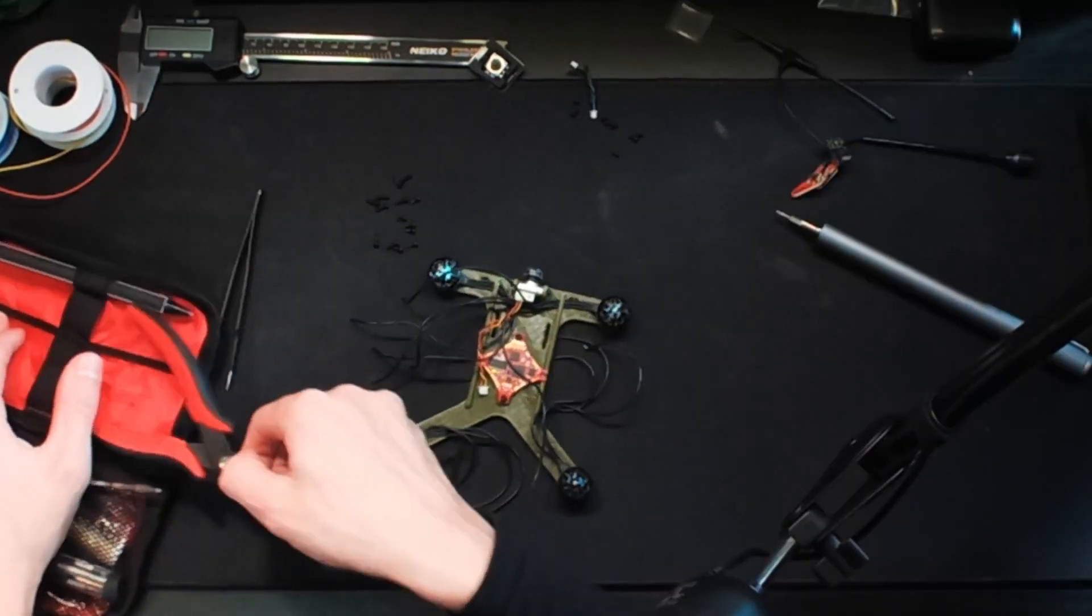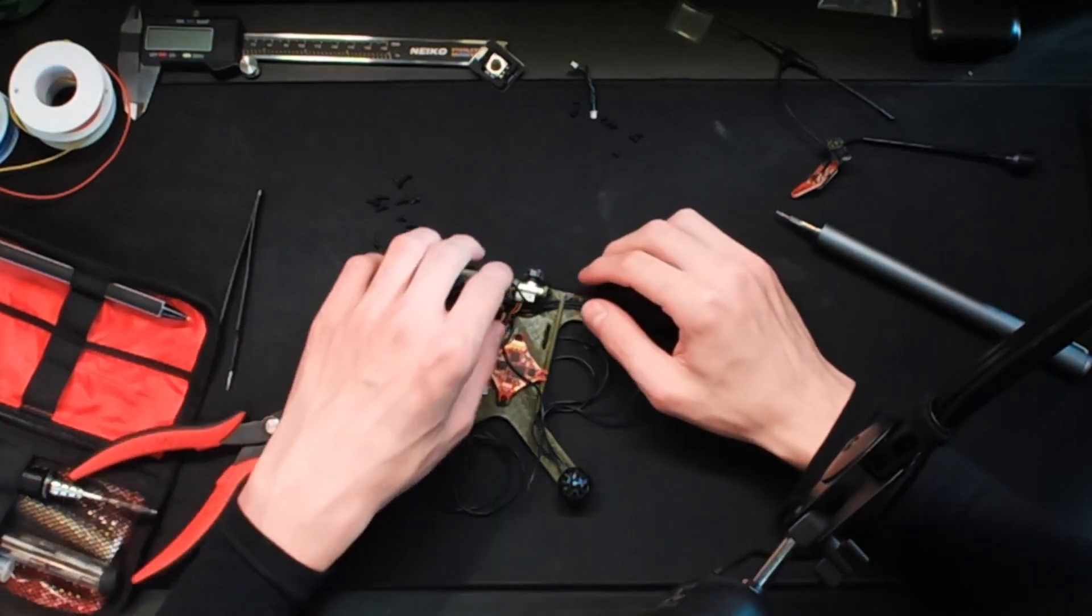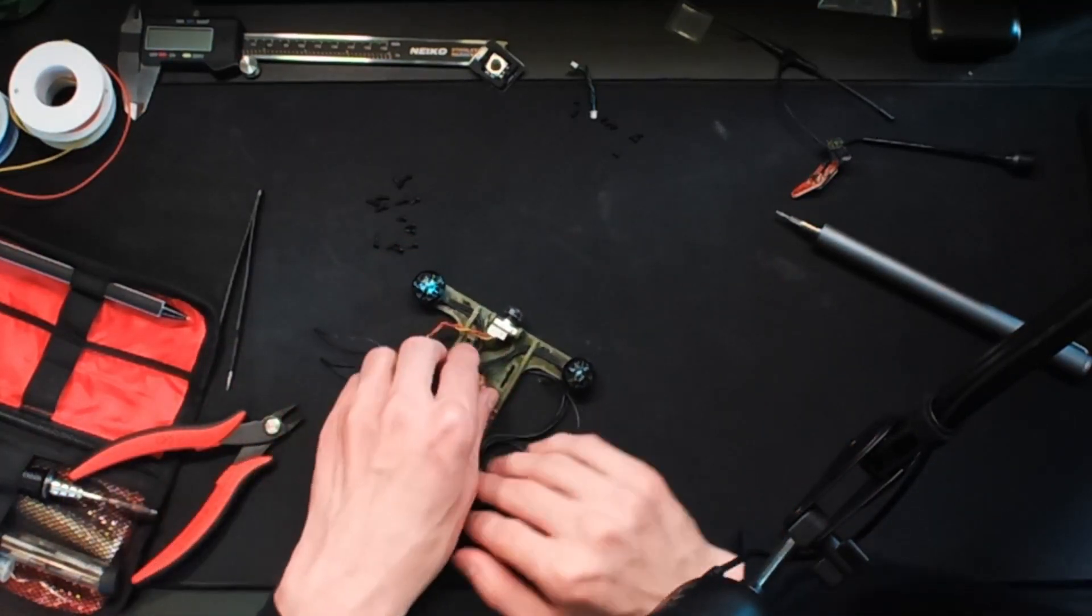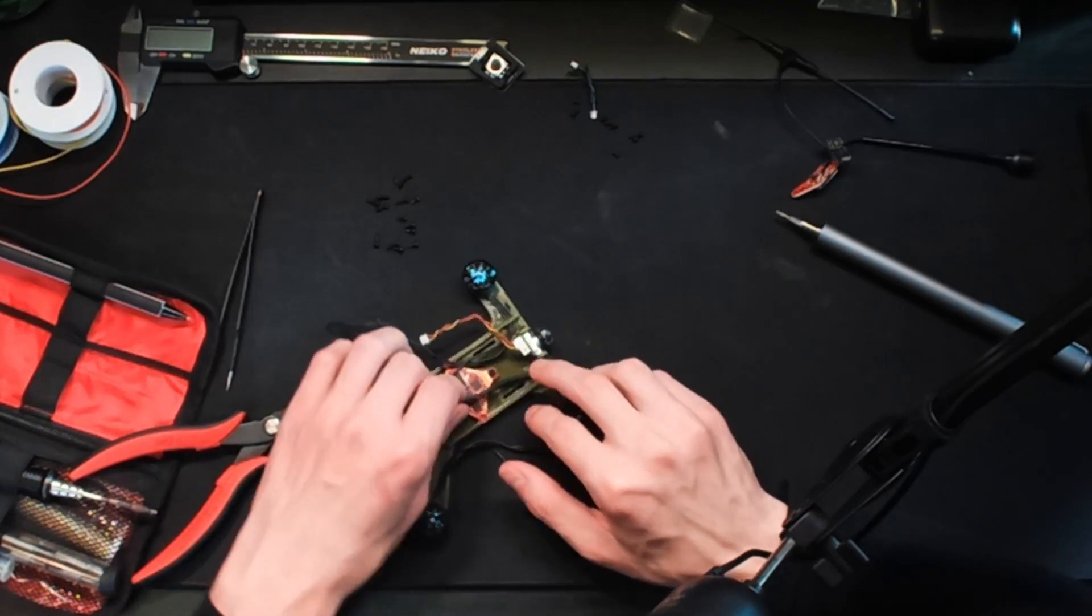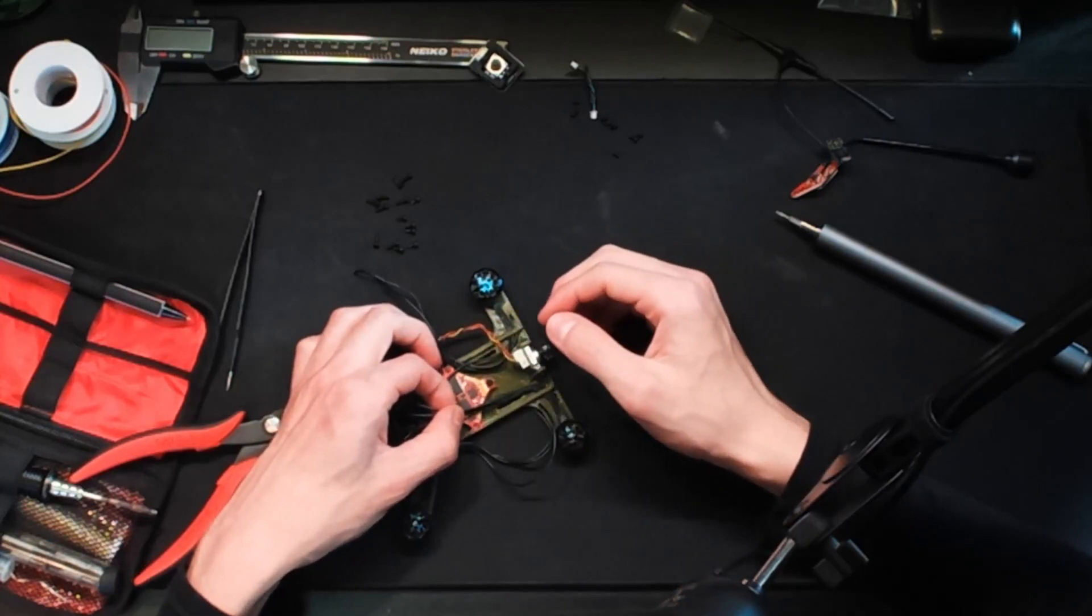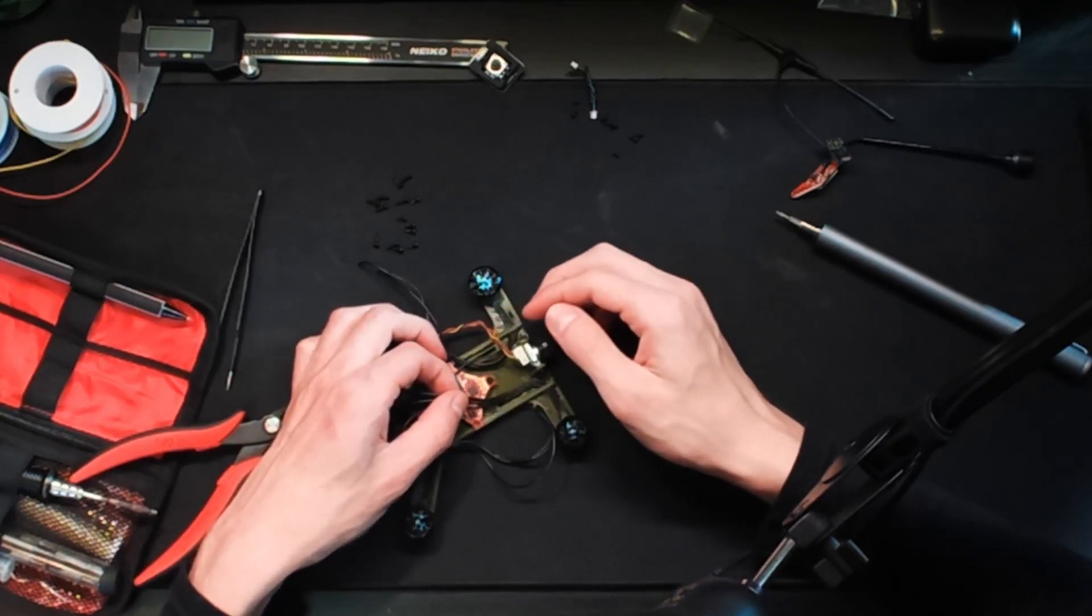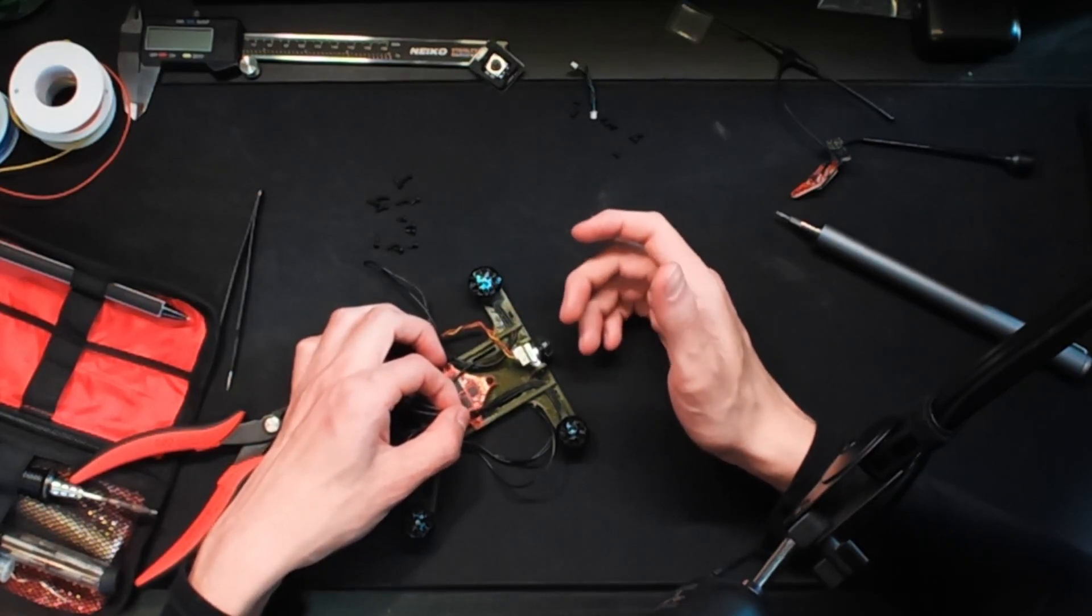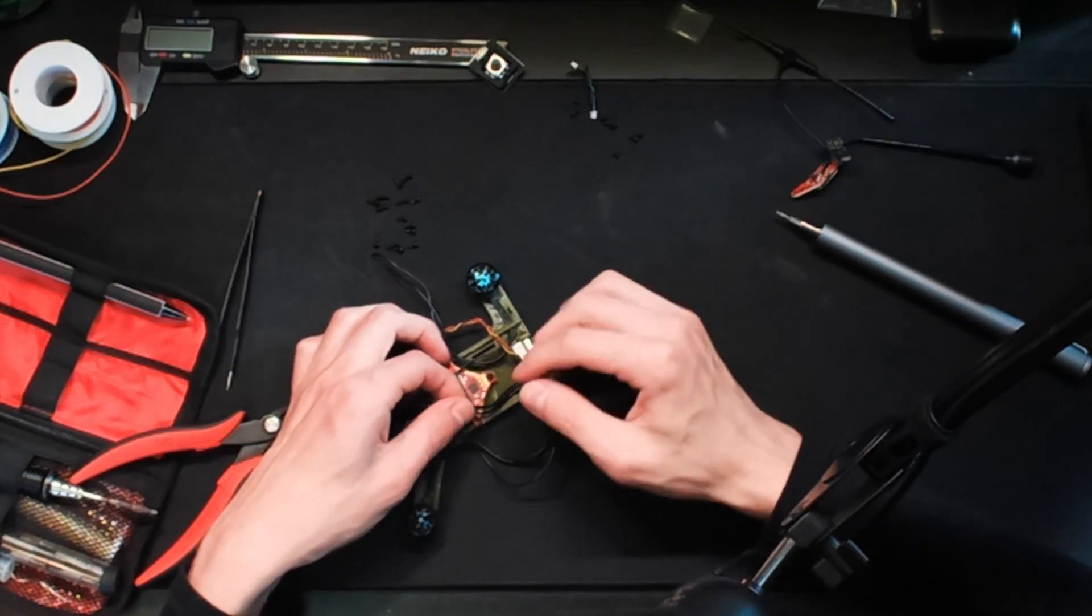First things first, we are obviously going to need to shorten our motor wires as they came to be excessively long. So we want to figure out where the motor wires are going to go and cut them about a centimeter longer than that, because we're going to want some extra room to not strain the wires. And also in the future, if we ever have anything happen, we want to have enough length to cut and re-solder the wires.